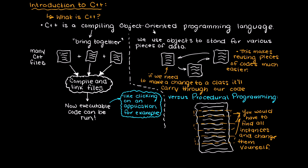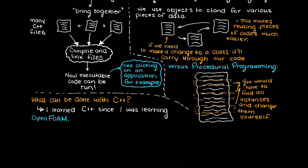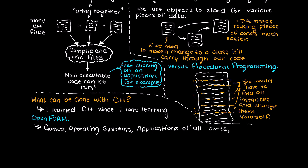Before learning any new programming language, we should talk about some of the things that can be done in it. I set out to learn C++ as I was learning OpenFoam, which is an open source simulation software that is built using C++ code. However, other things that are commonly coded in C++ are games, operating systems, applications of all sorts, and tons of other things.